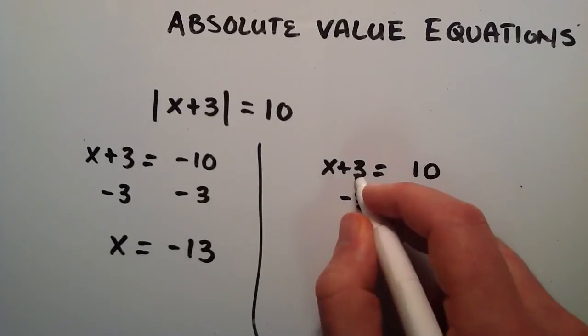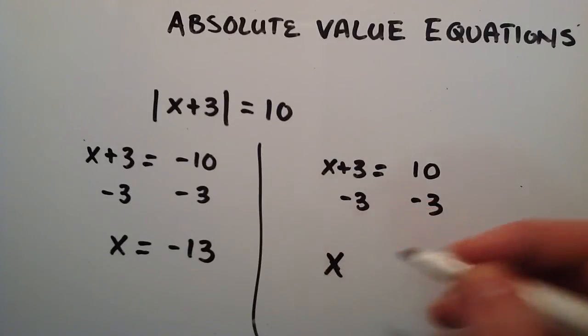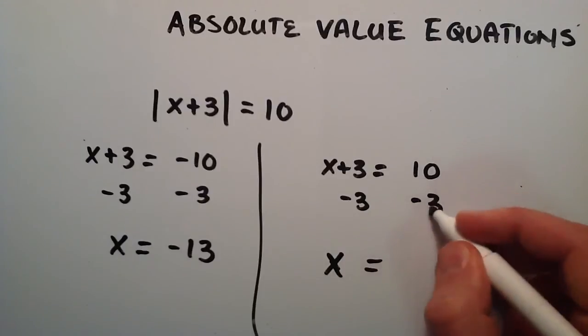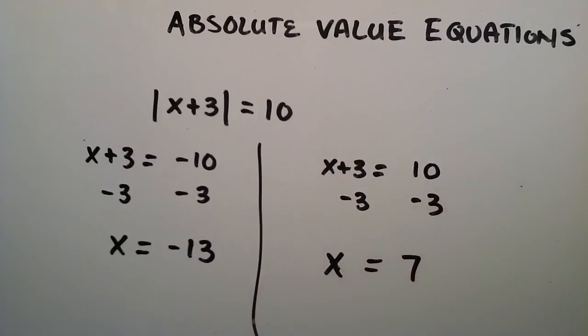And then we have x once again on here, since the positive and negative three cancel, just leaving us with the x term. And then 10 minus three equals seven. And now we have our two solutions.